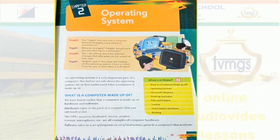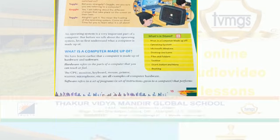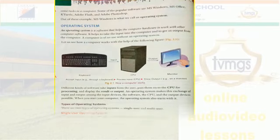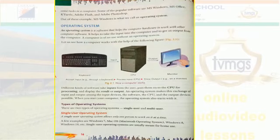Now we move to our next page and discuss the list of topics. Some popular software are MS-Windows, MS-Office, K-Turtle, Adobe Flash, and Adobe Photoshop. Out of these, MS-Windows is what we call an operating system — like Windows 7, Windows 8, Windows XP, and more recently Windows 10.